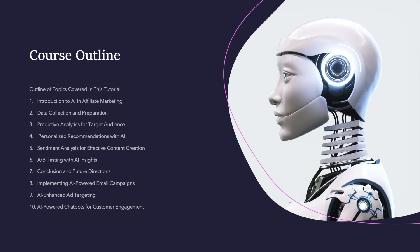The seventh topic is Conclusion and Future Direction — summarizing how to help your client or your own business with future direction. We'll talk about potential future advancements and how to track trends in AI affiliate marketing so you can create forecasts and make futuristic decisions before other companies do, giving you a competitive advantage.